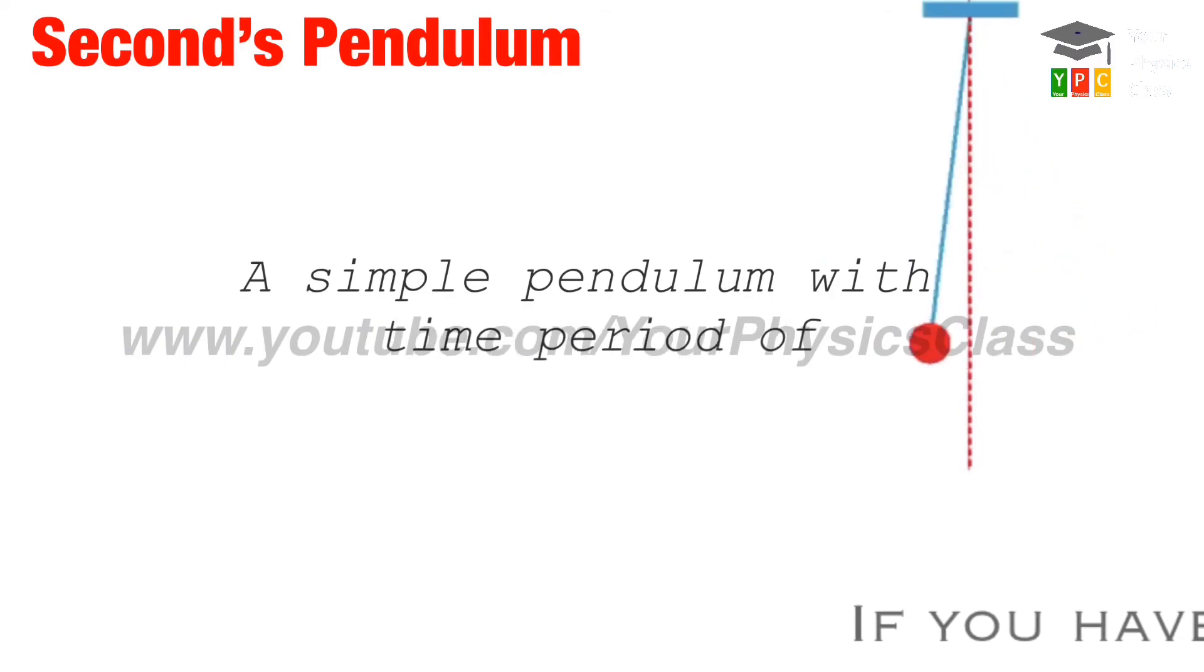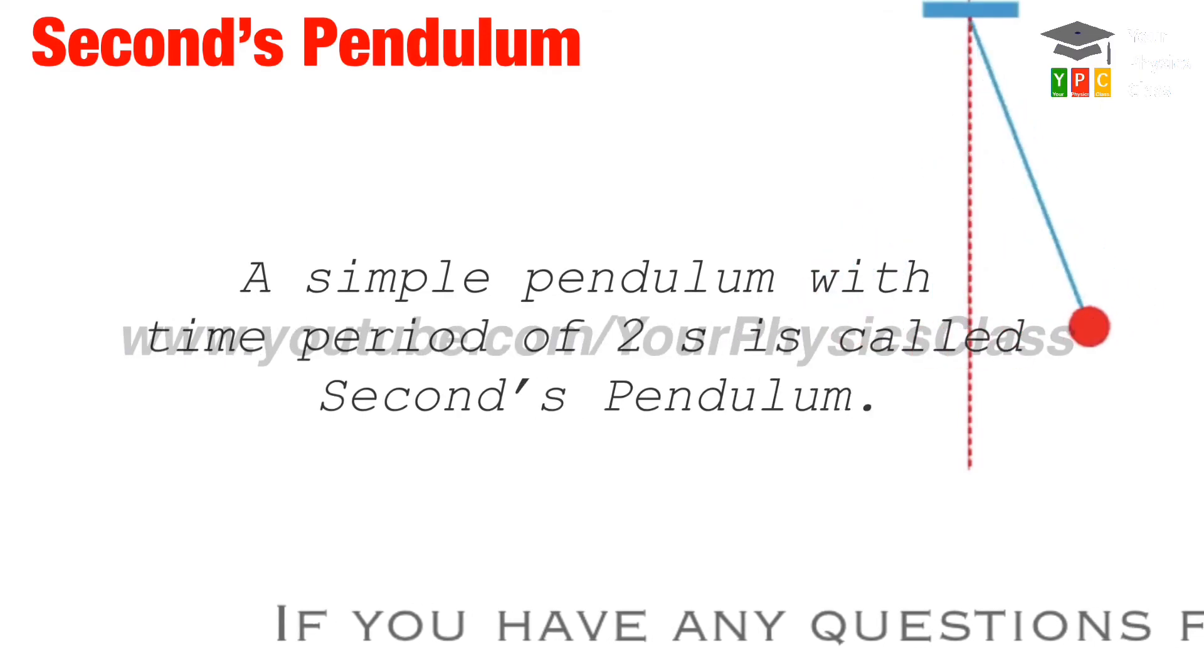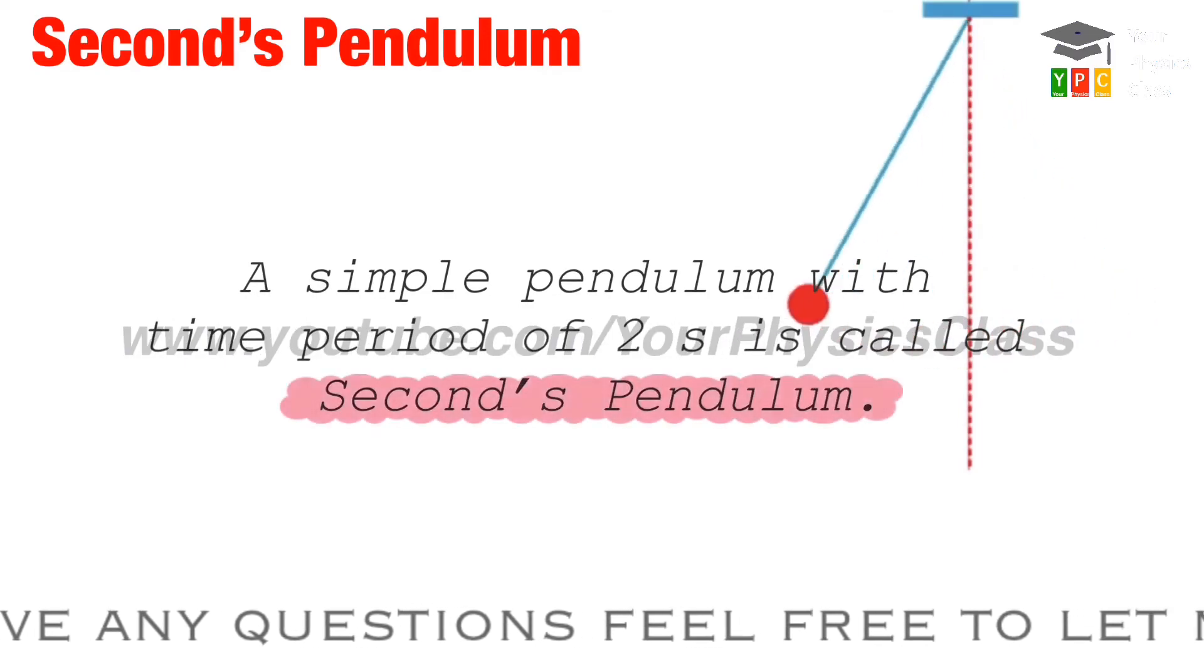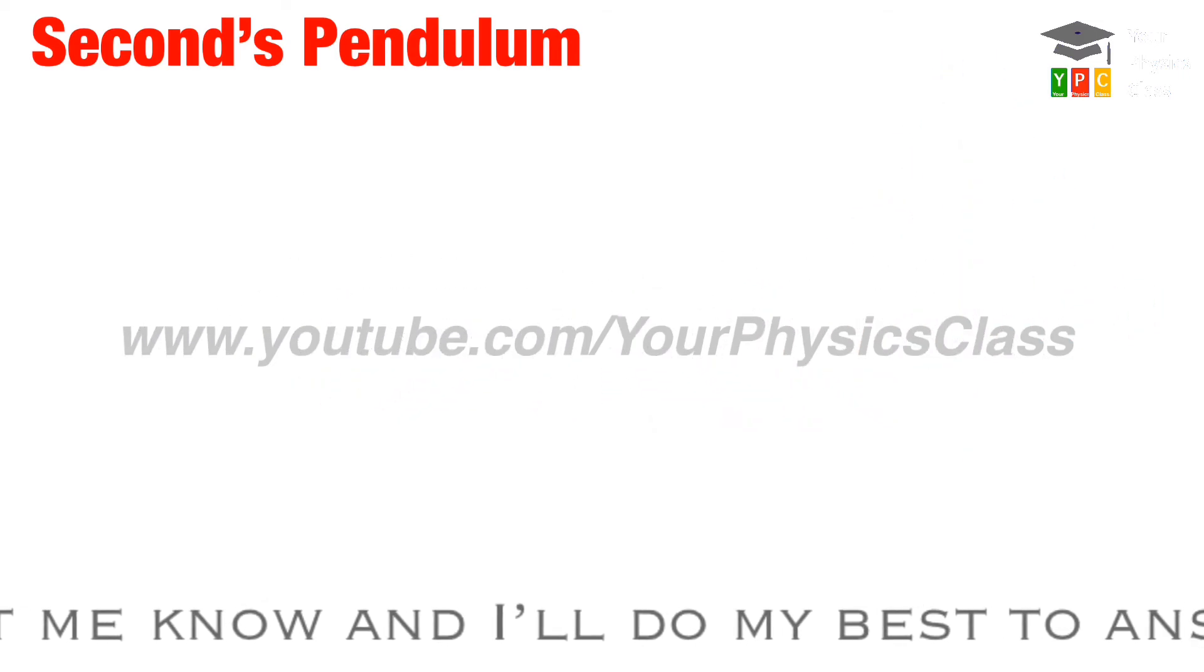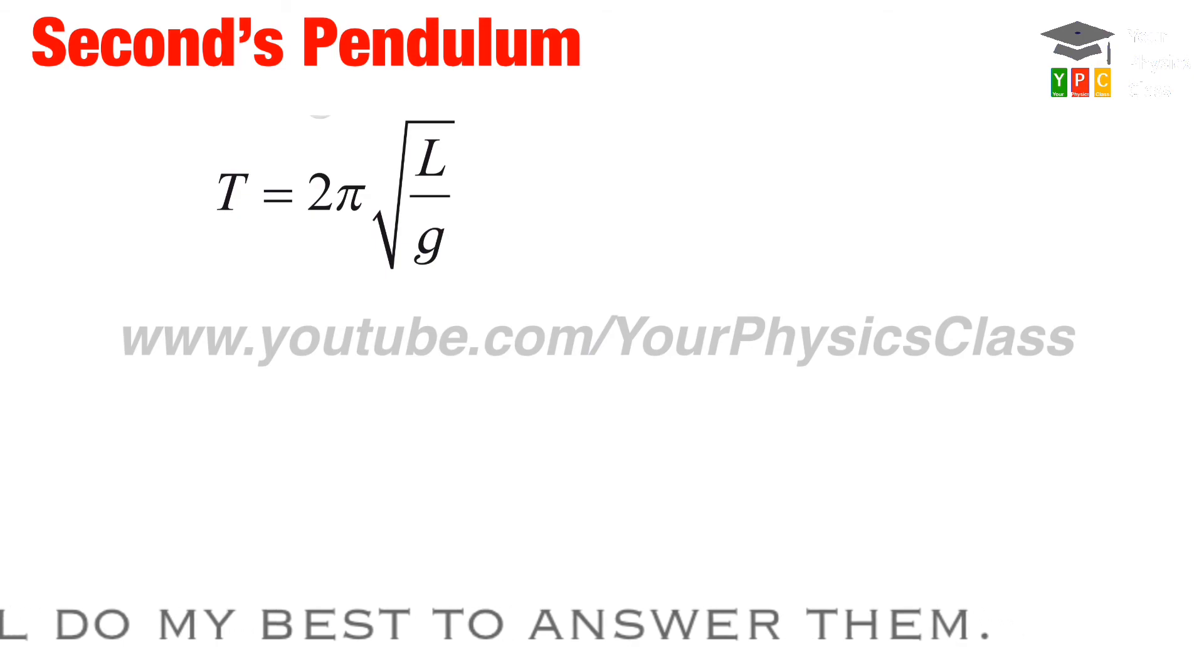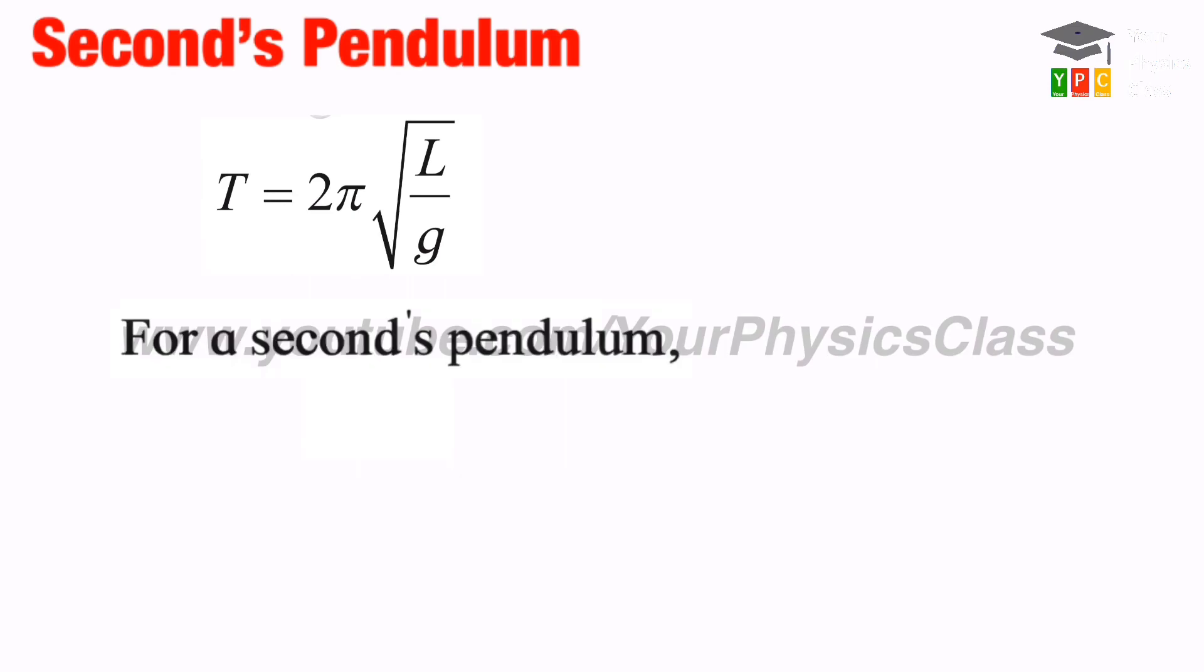A simple pendulum with time period of 2 seconds is called seconds pendulum. Let's calculate its length using T equals 2π under root of L upon g. Because basically, seconds pendulum is a simple pendulum. For seconds pendulum, we have T equals 2 seconds. Substituting this value in above formula, we get 2 equals 2π under root of L by g.